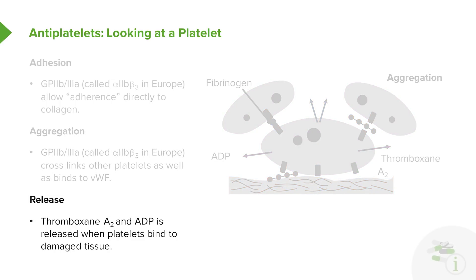The third component of platelet function is its release function. Thromboxane A2 plays a very important role in the release function. ADP is released when platelets bind to damaged tissue, and ADP is another important component in platelet function.